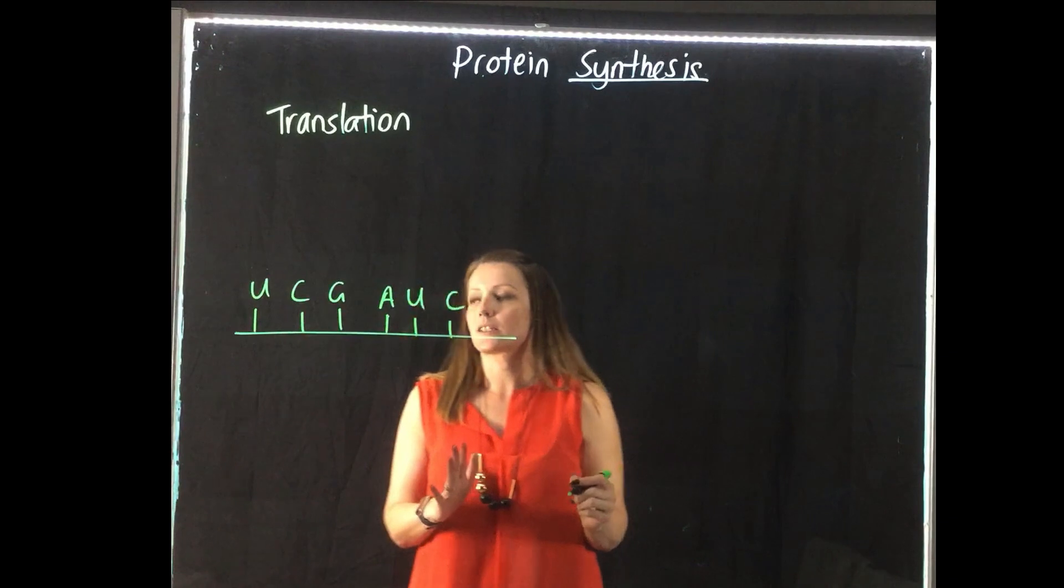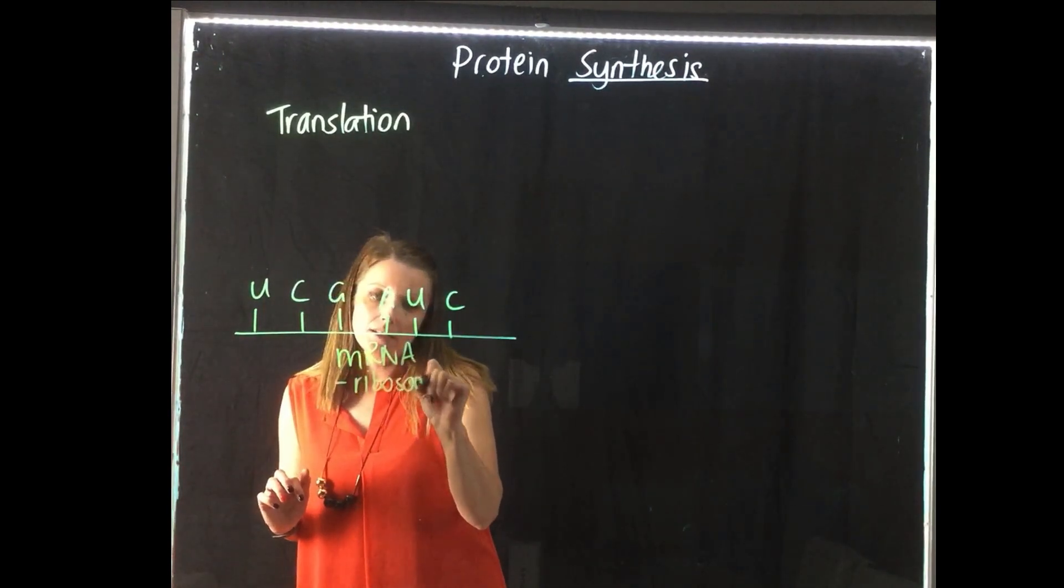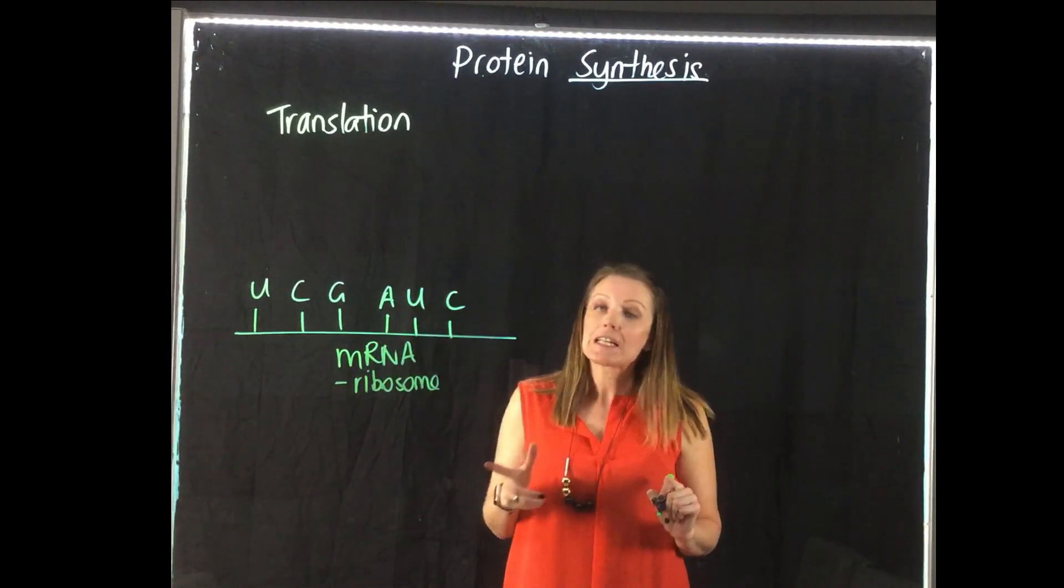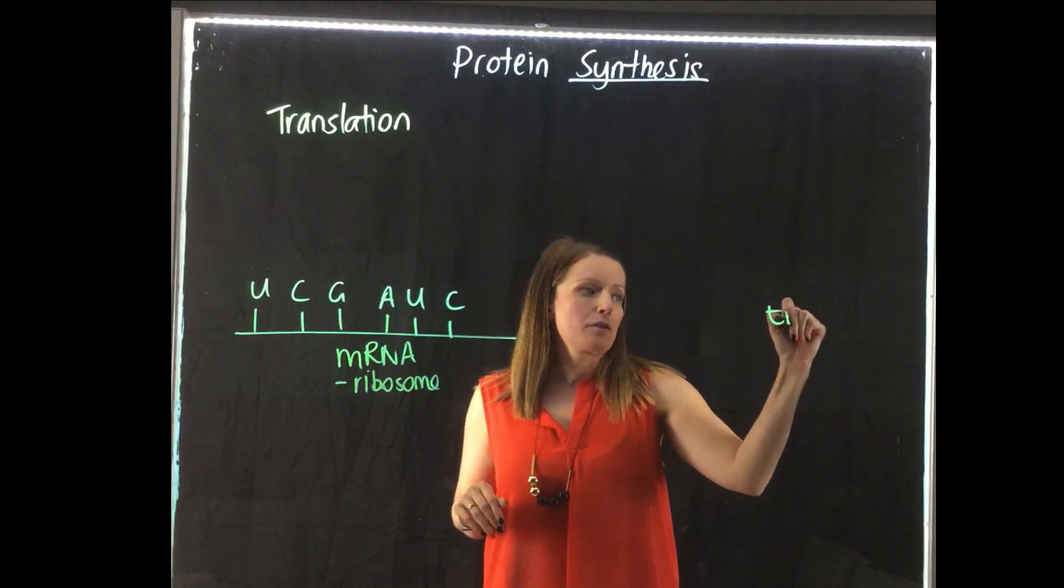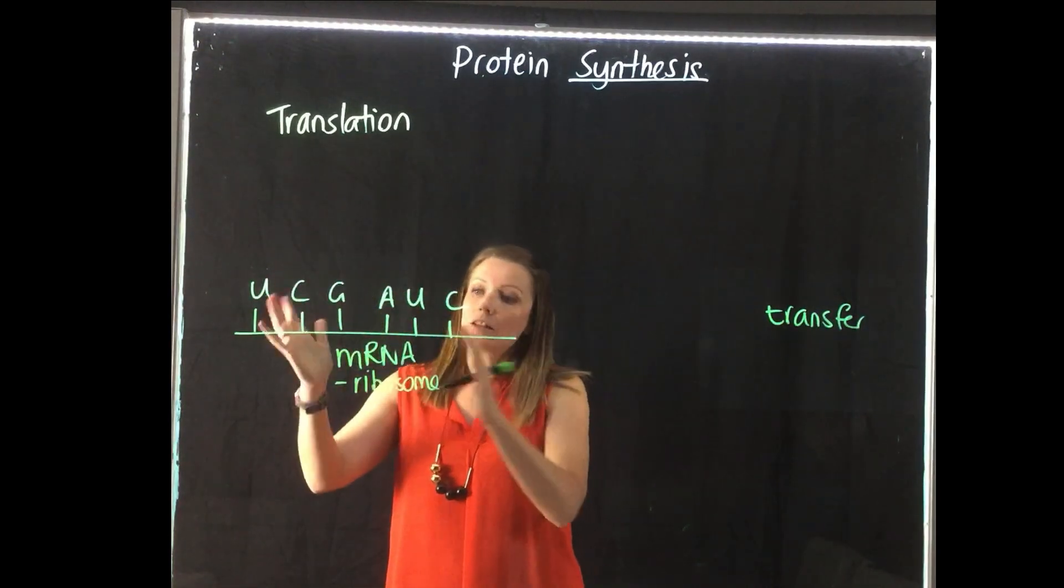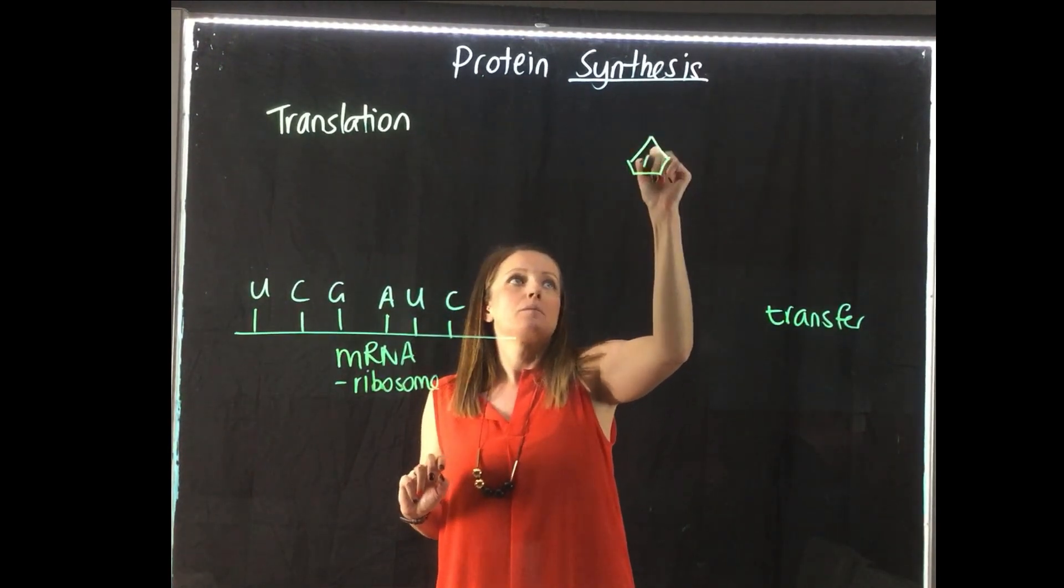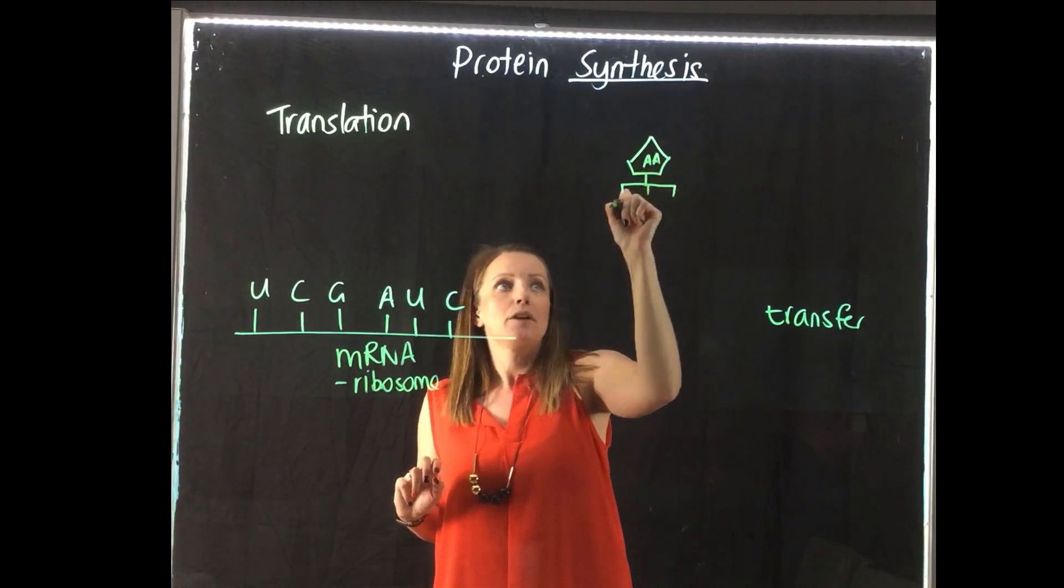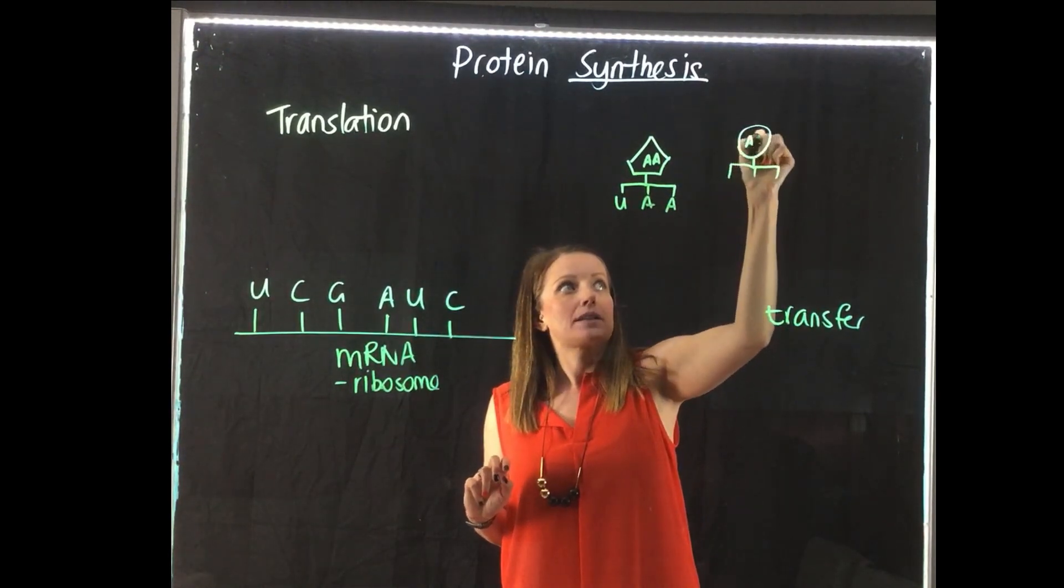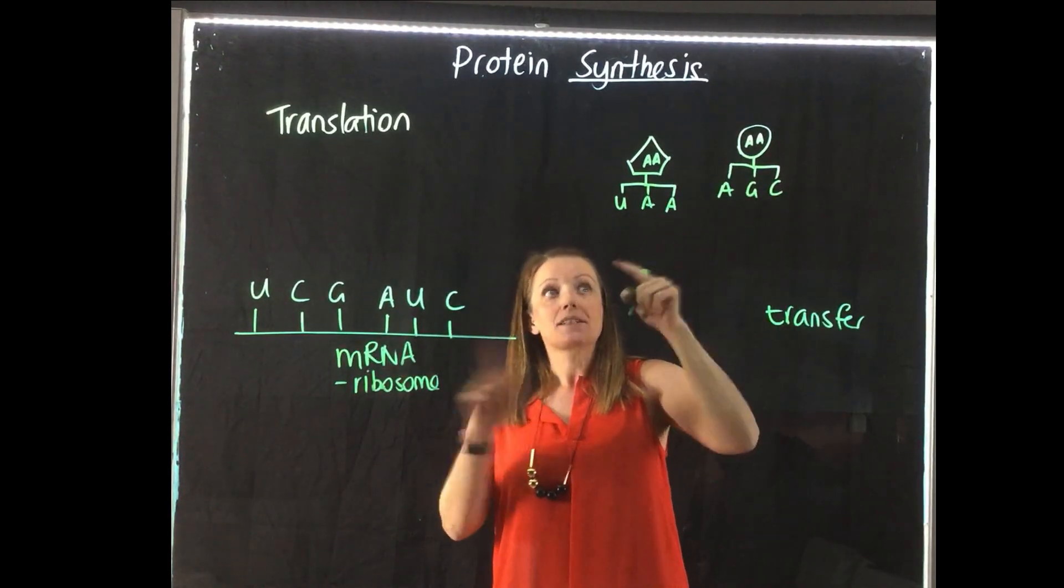So this is our mRNA, and it attaches to a ribosome, as I said, is the organelle in the cytoplasm where protein synthesis takes place. Now we mentioned another type of RNA, tRNA. So tRNA is transfer RNA, and its job is to bring the amino acids in and line them up with the mRNA in order to create our protein. So if we draw an amino acid up here, it will have three bases attached to it, and we have different amino acids that have different combinations of bases attached to them as well.